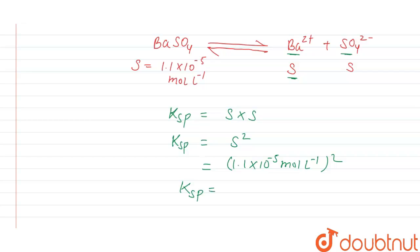So by calculating this value, we get Ksp of barium sulfate at 298 Kelvin will be equal to 1.2 × 10^-10 mole squared per liter squared, which is the required Ksp of barium sulfate.